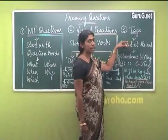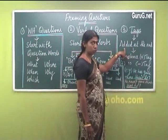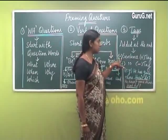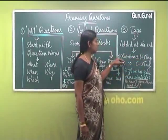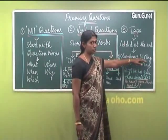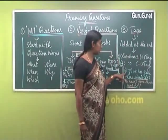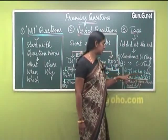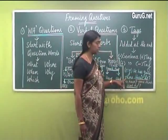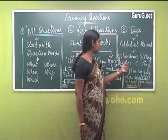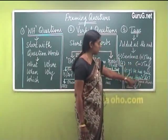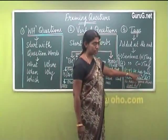Now we move on to tags. A tag is usually added at the end of a sentence. It is noteworthy that if the sentence is positive, the tag becomes negative; and if the sentence is negative, the tag is positive. To repeat: if the sentence is affirmative or positive, the tag is negative; if the sentence is negative, the tag is positive. For example, 'He has gone there' — the sentence is positive, so the tag should be negative.